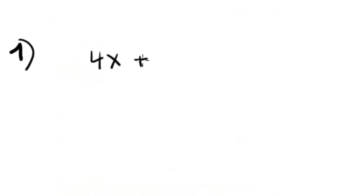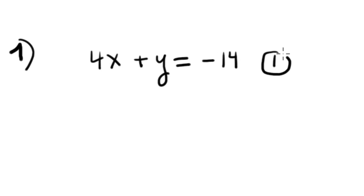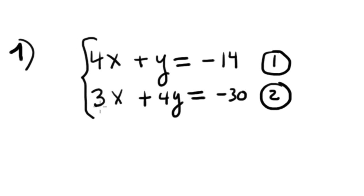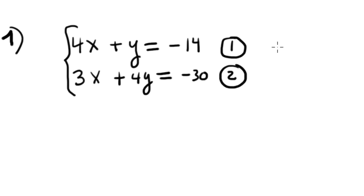The first equation is 2x plus y equals negative 14, equation number 1. The second equation is 3x plus 4y equals negative 30, equation number 2. This is the system, and the solution listed is x equals negative 2 and y equals negative 6.